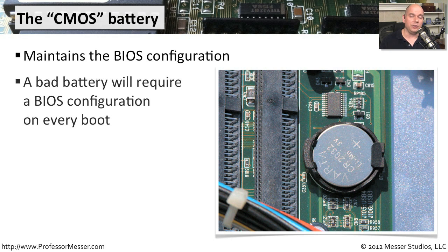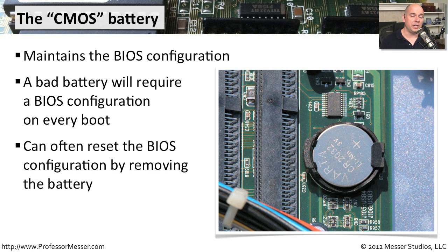If that battery ever goes bad, you'll start getting messages when you start up your computer telling you that the configuration settings are incomplete or missing. Every time you start your computer, you have to confirm the configuration before you can continue on and boot up your system. Sometimes you can remove this battery and it will wipe clean the configuration of your CMOS. Since configuration settings might have passwords inside of them, some people find that by removing that battery, they can clear out any BIOS configurations that may have been set for password protecting the computer.